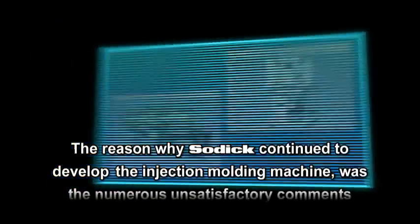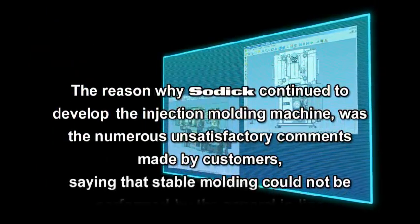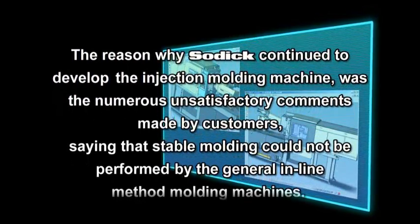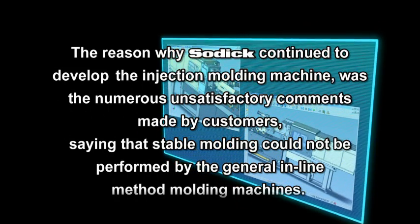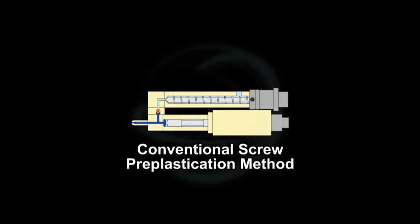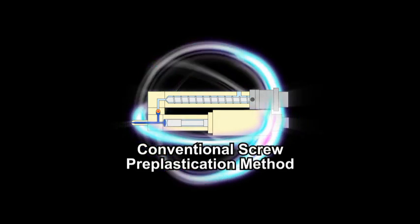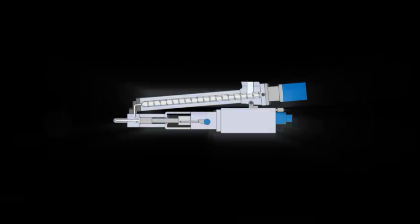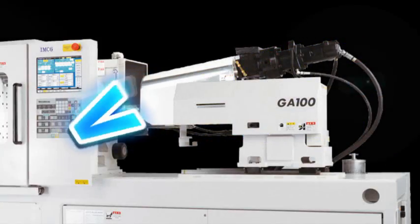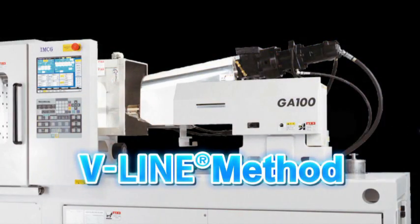The reason why Sodec continued to develop the Injection Moulding Machine was the numerous unsatisfactory comments made by customers saying that stable moulding could not be performed by the general In-Line Method Moulding Machines. Sodec paid attention to the conventional screw pre-plastication method again and made great improvements with the unique technologies of Sodec to create this V-Line Method.